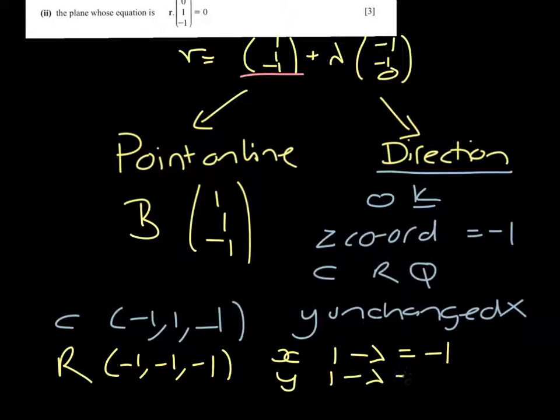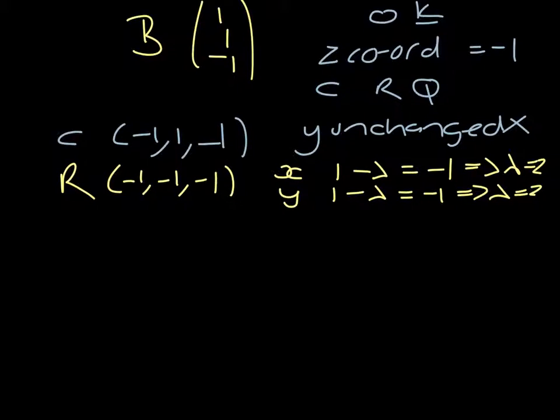and 1 minus lambda equals -1. So the x-coordinate gives us that lambda equals 2, and the y-coordinate equals lambda equals 2. So R lies on the line.